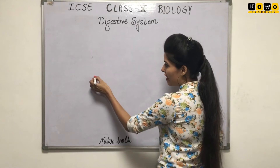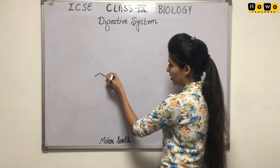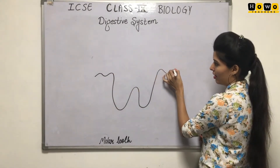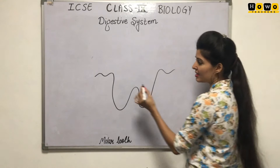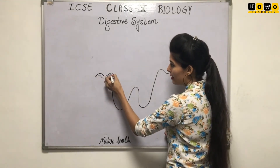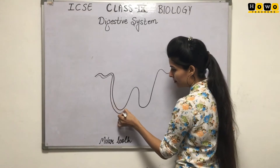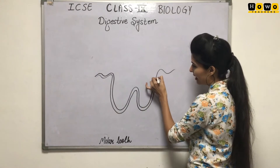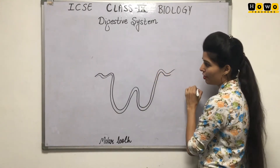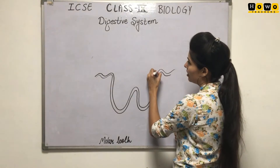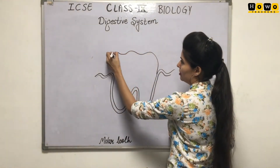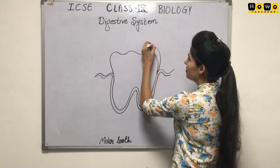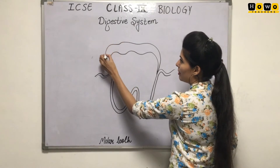In the beginning, you just have to write a W like this. You can make a double line. This is actually the jaw part that we are drawing right now. And over that, you have to write an M-like structure, which we can further make a double lining of.